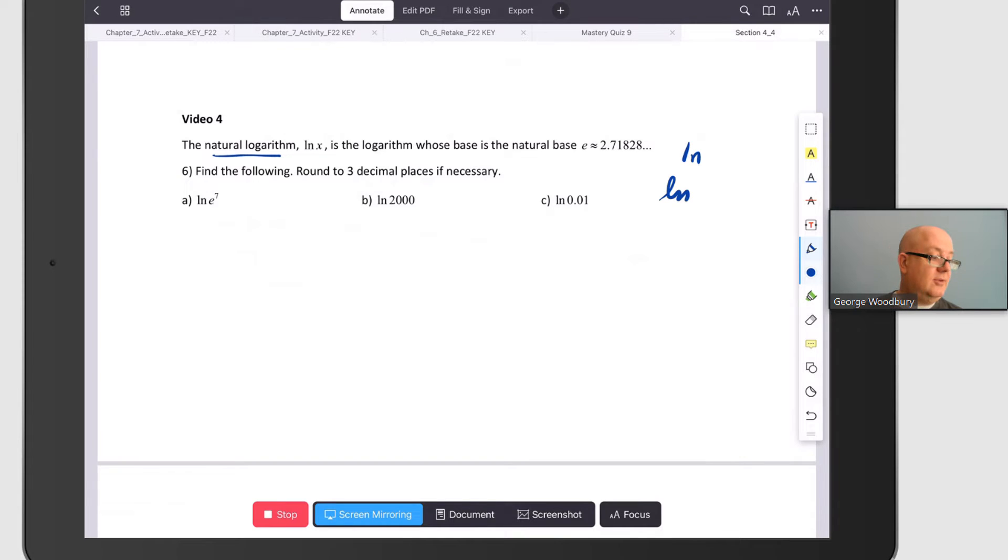It's the logarithm whose base is the natural base e, and remember e is that number, Euler's number 2.71828, it's an irrational number, it doesn't terminate, it doesn't repeat.